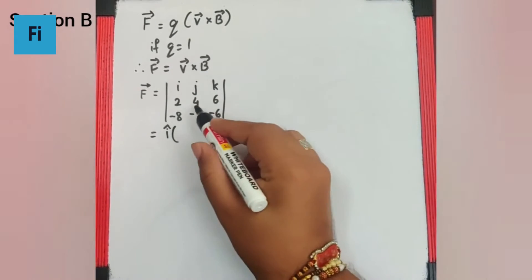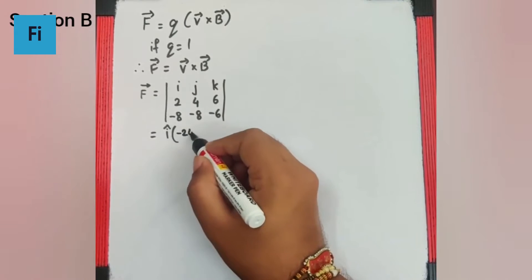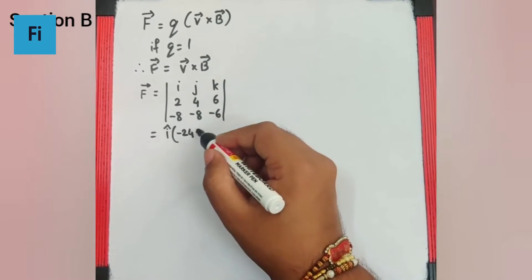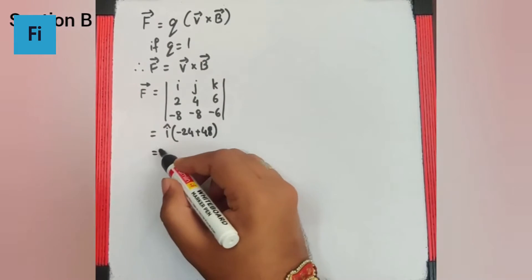It is going to be i cap into: 6 into minus 6, 4 into minus 4 is going to be minus 24, minus 8 times 6 of 48, but minus minus becomes plus 48. That gives you 48 minus 24 as 24i cap.